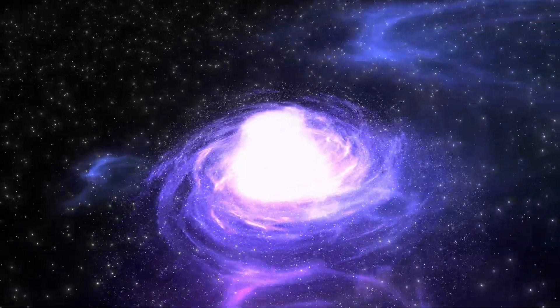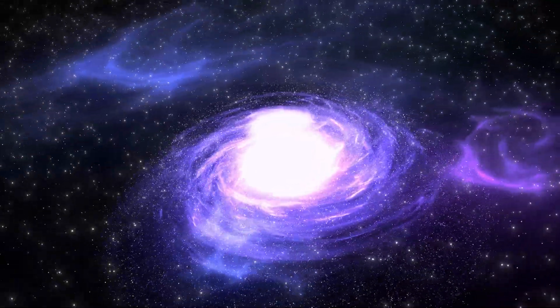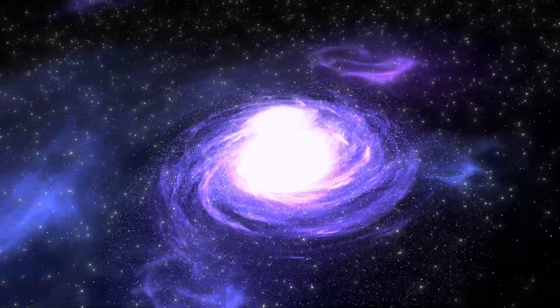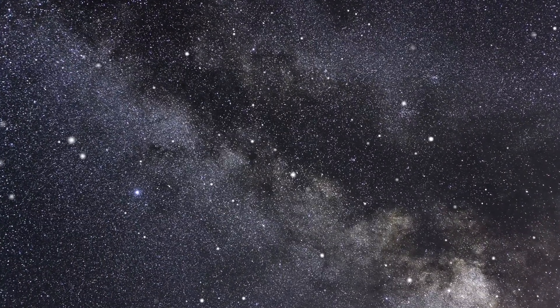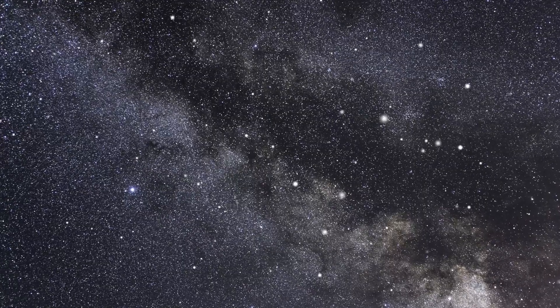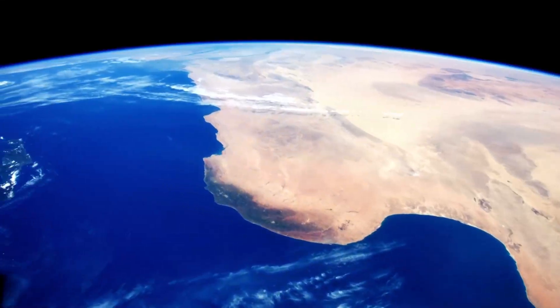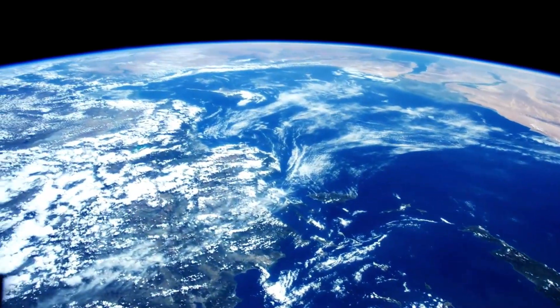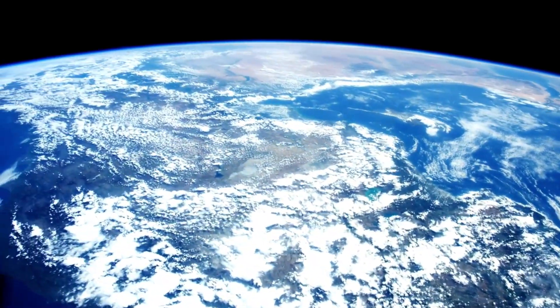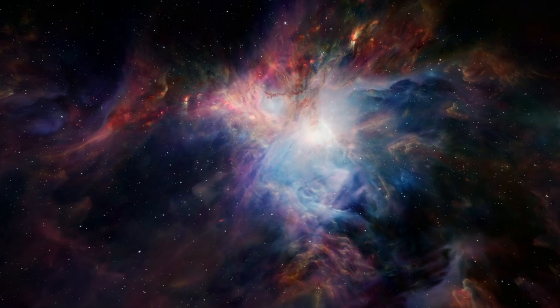While the concept of an infinite universe is mind-boggling, we must also acknowledge the limitations of our observations. The observable universe is the portion of the cosmos that we can currently detect from Earth. It is a sphere with a radius of about 46.5 billion light-years, centered on our planet. The light from objects beyond this distance has not had enough time to reach us since the Big Bang.